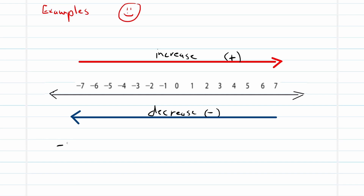So negative six plus five equals negative one is one example, and five minus two equals three is the other. I want you to practice this on your own. Other examples to help you understand are the ones from daily life.